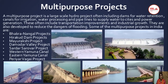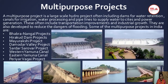Some of the major multi-purpose projects in India are: Bhakra Nangal Project, Hirakud Dam Project, Mayurakshi Project, Damodar Valley Project, Sardar Sarovar Project, Western Yamuna Canal, Eastern Yamuna Canal, and Periyar-Vaigai Projects. Note: this chapter will be evaluated mostly in your periodic test, but map work — as per the CBSE syllabus — will come in your board examination. You must learn the locations of all these dams and multi-purpose projects and some Indian rivers.